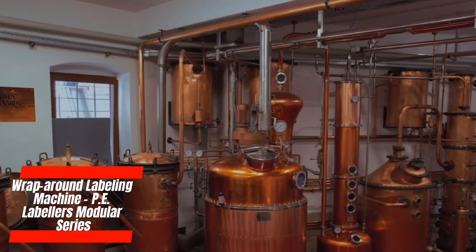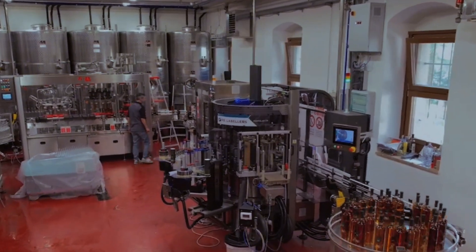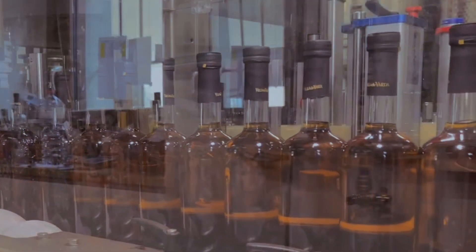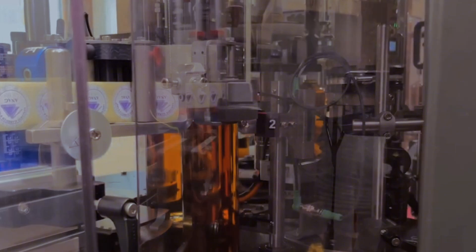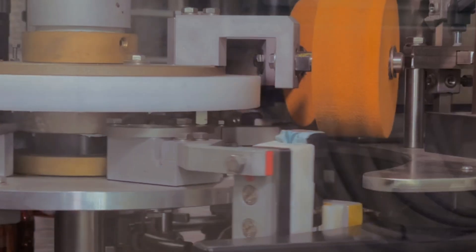P.E. Labeler's Modular Series is synonymous with high-speed and accurate wraparound labeling. Its advanced sensor technology and servo-driven label application ensures seamless label placement, even on irregularly-shaped containers. The flexibility of the modular series allows for easy integration with upstream and downstream equipment, facilitating a smooth production flow. Food manufacturers benefit from the modular series' ability to handle various label materials and sizes, reducing material waste and operational costs.